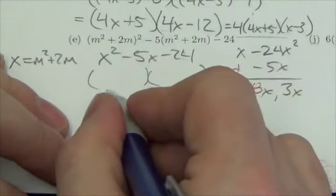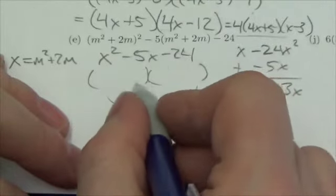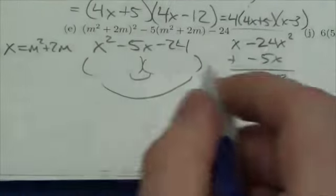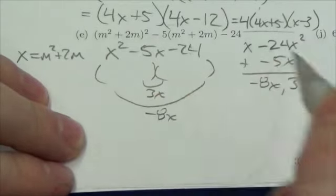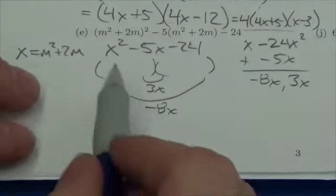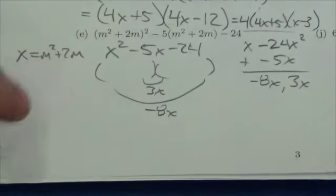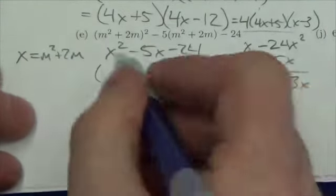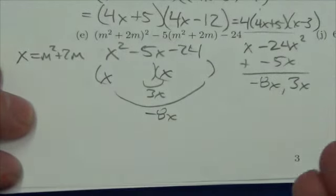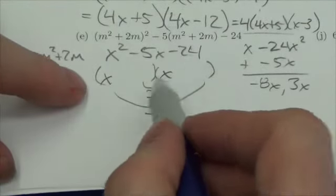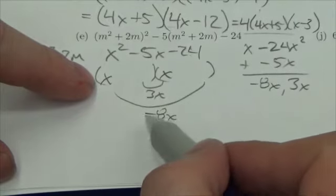So now once again, those aren't the terms that go necessarily inside those polynomials there. These are the outer and the inner products. Now the first two terms here in either binomial, their product has to be x squared. Okay, to get that term right there. So it's got to both be x.